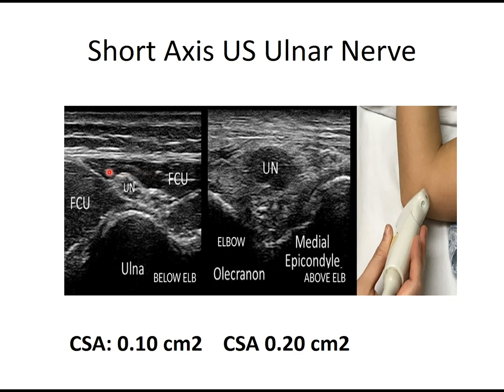The aponeurosis forms between the two heads of the flexor carpi ulnaris muscles, and we measured the cross-sectional area at 0.1 square centimeters. We then measured it a little more proximally in the retrocondylar groove between the medial epicondyle and the olecranon.